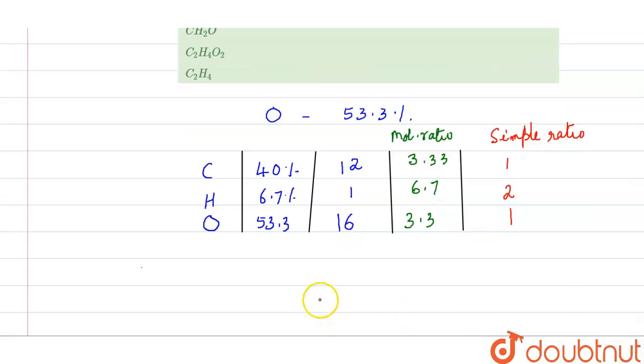So now we have to calculate the empirical formula. Let us write the ratio first. Simple ratio is 1:2:1. So carbon is 1, hydrogen is 2, and oxygen is 1. So CH2O is the empirical formula of the organic compound given.